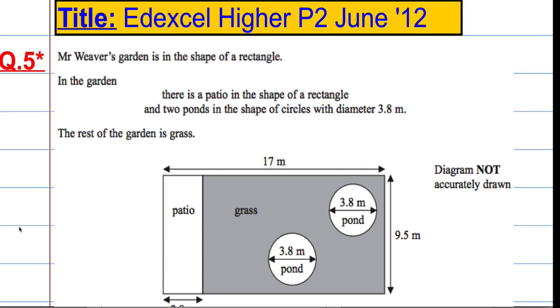Okay, in question 5 is a QWC question which is testing the quality of our written communication. So we need to be very specific about how we set out our answers here. Mr Weaver's garden is in the shape of a rectangle and in the garden there is a patio in the shape of a rectangle and two ponds in the shape of circles with a diameter of 3.8. The rest of the garden is grass.